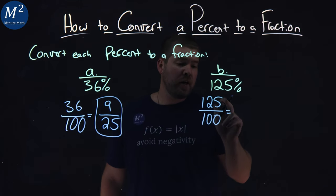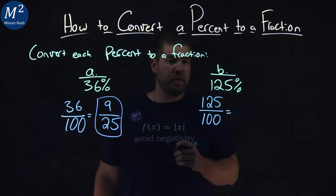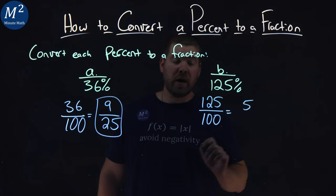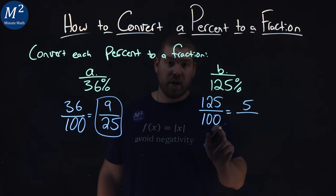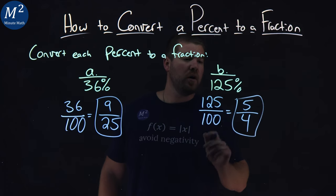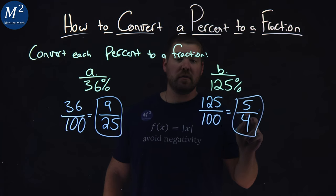Now 125 and 100, both numbers have 25 that can go into them. 125 divided by 25 is going to be 5, and 100 divided by 25 is 4. And so from here, 125 percent is equivalent to the fraction 5 fourths.